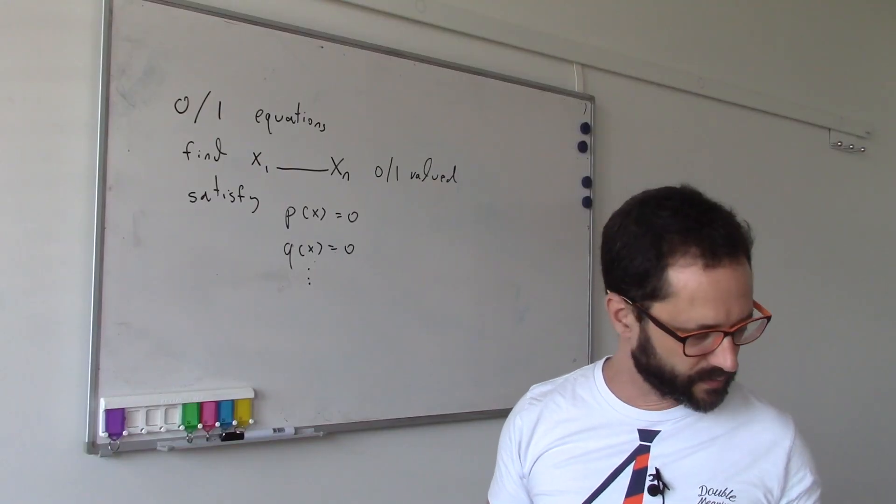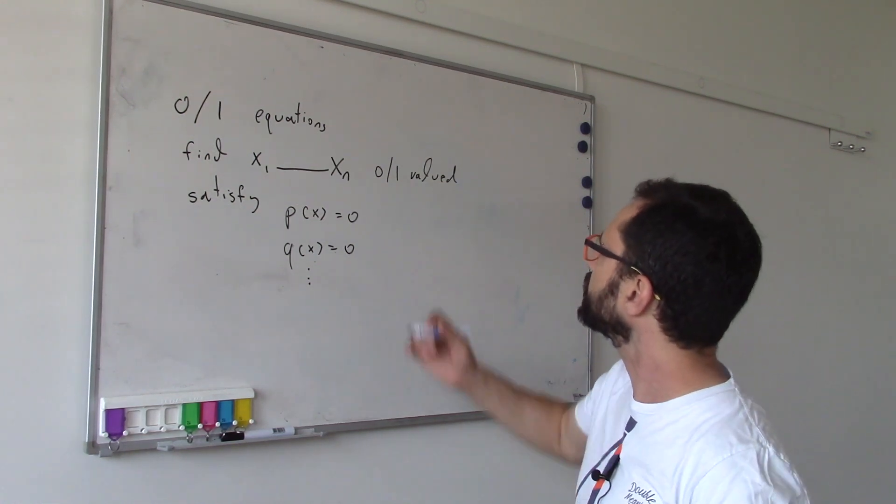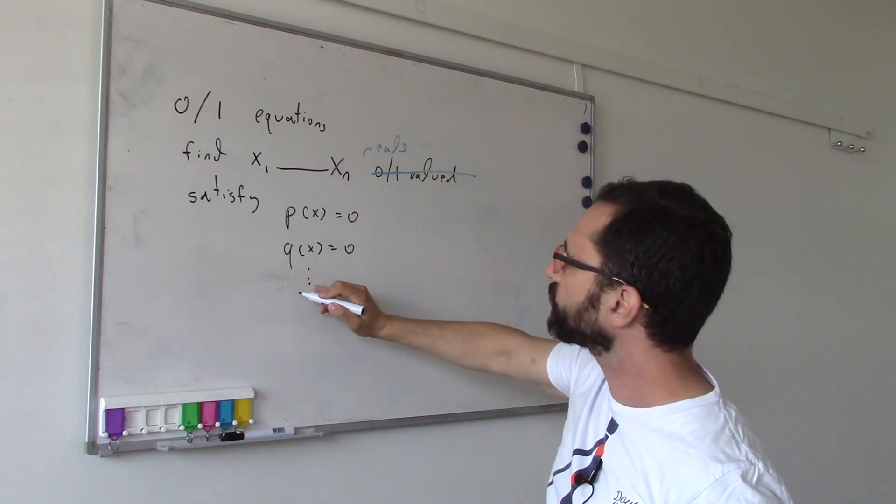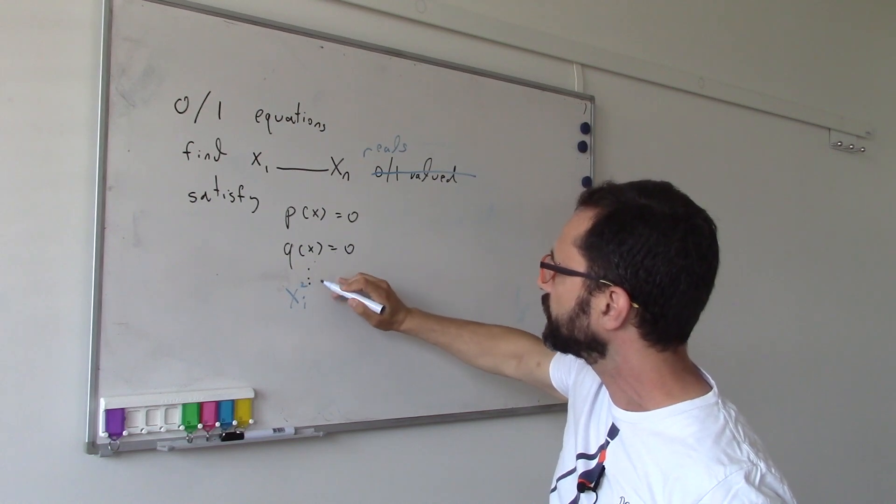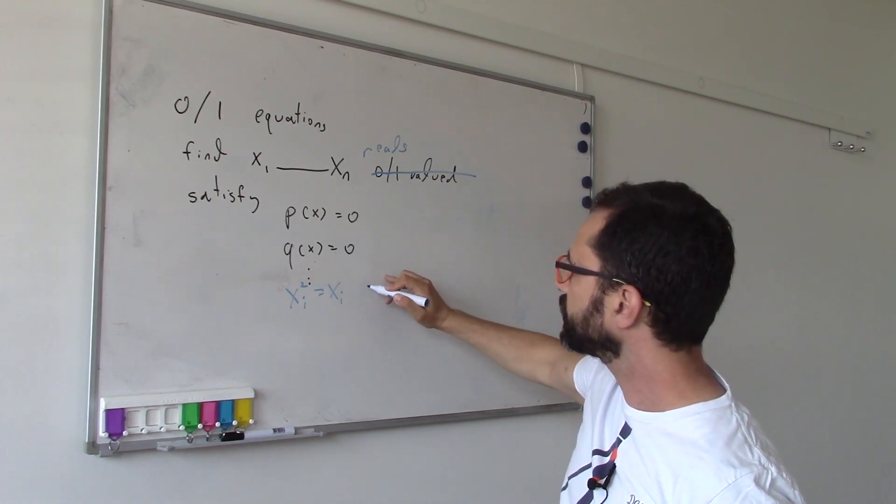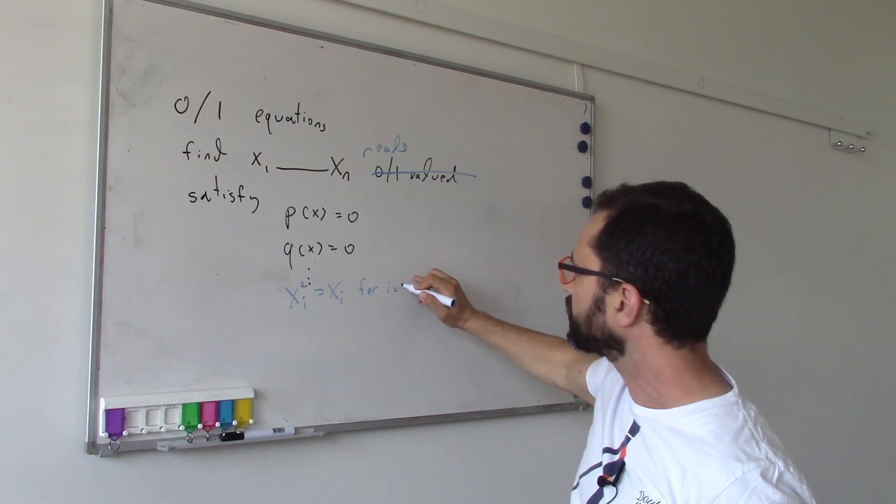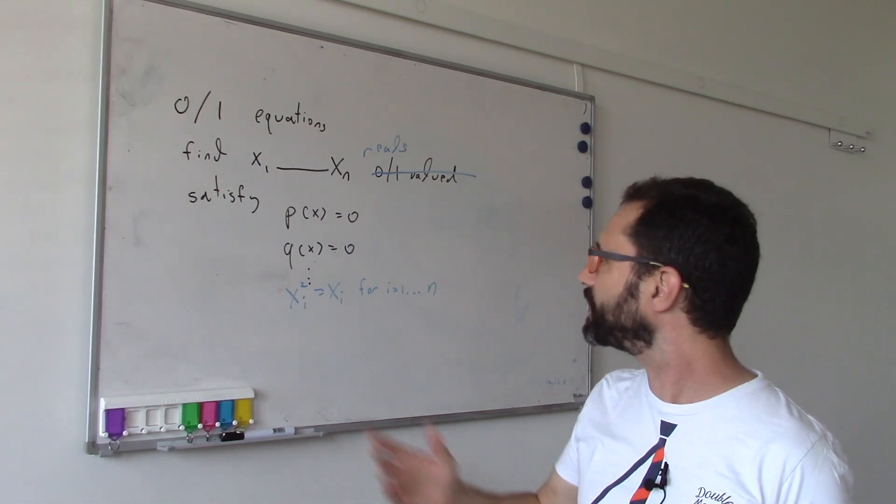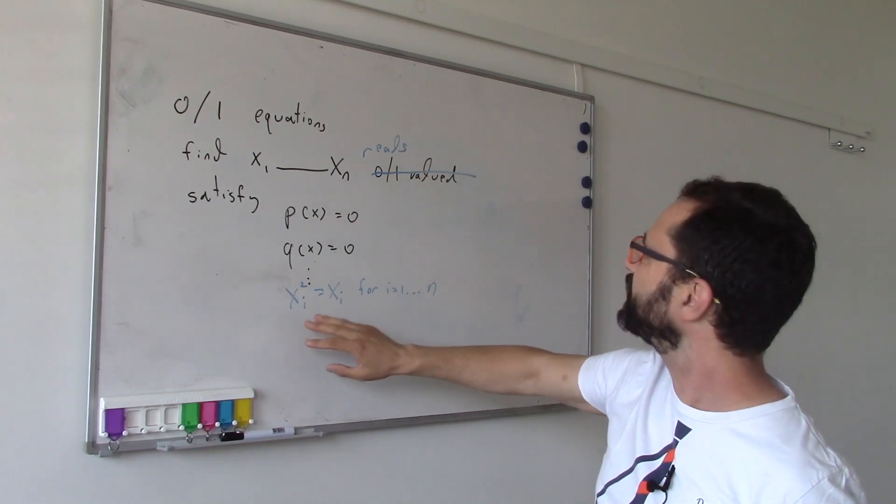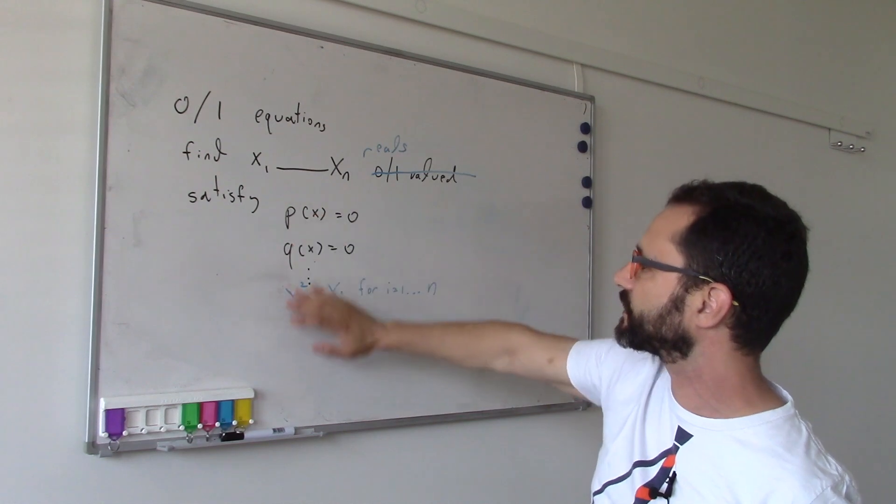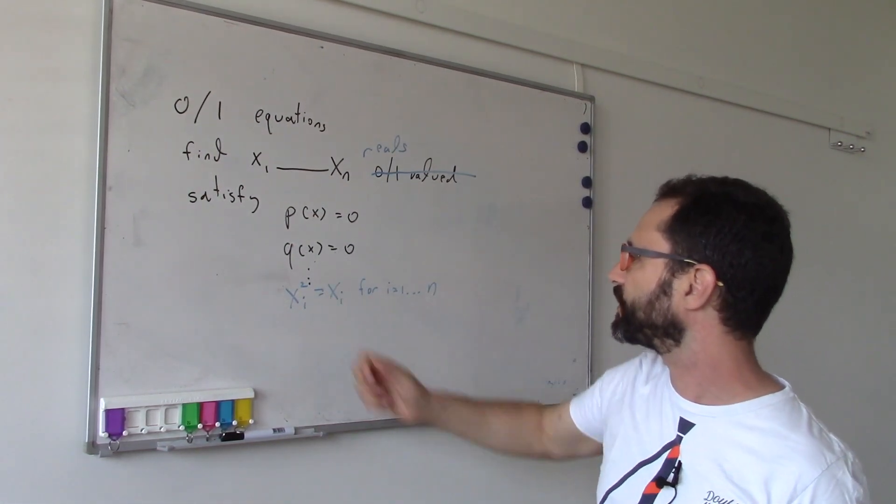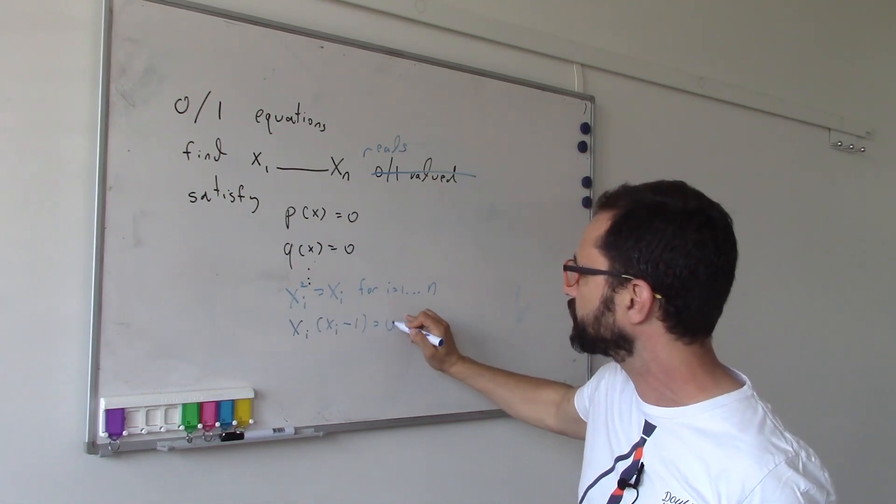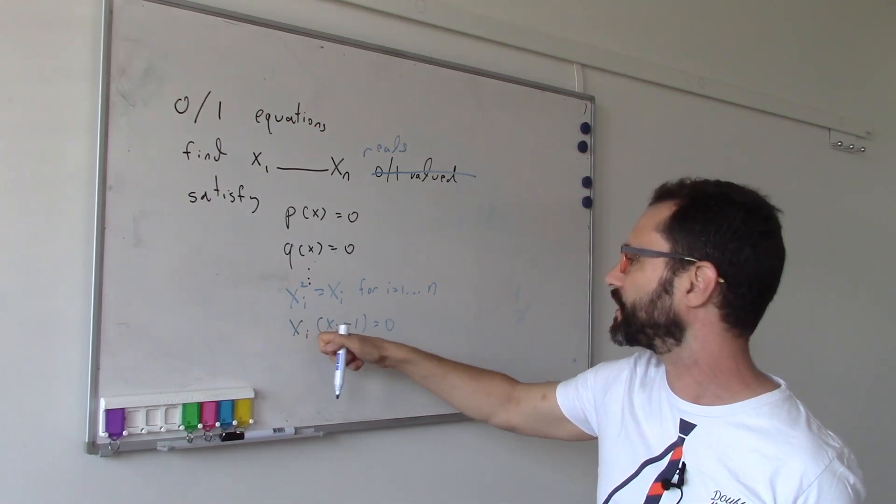The way we approach this with sum of squares is we say, let's ignore this constraint and just find x that are reals, but we also have the equation that xi² = xi for i from 1 to n. We haven't changed the problem at all - it's still an equation that asks for zero-one variables, because this only happens if xi(xi - 1) = 0, which only happens if either xi is zero or xi is one.